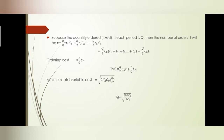Total variable cost (TVC) equals Q/2 into CH into T, plus D/Q into CO. The minimum total variable cost is equal to the square root of 2 times CH times CO times D divided by T. The optimal Q equals the square root of 2 times D times CO divided by (T times CH).